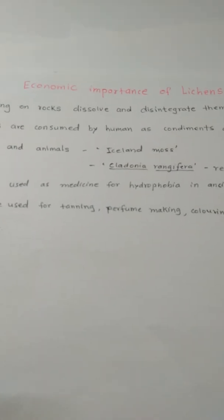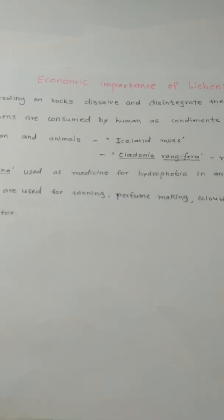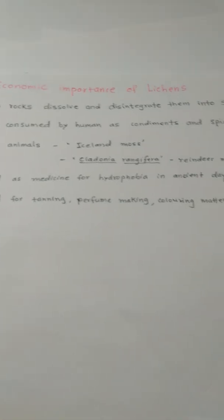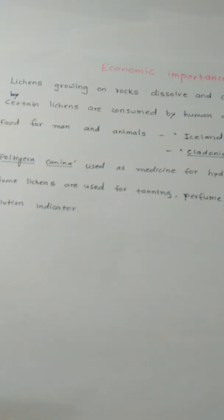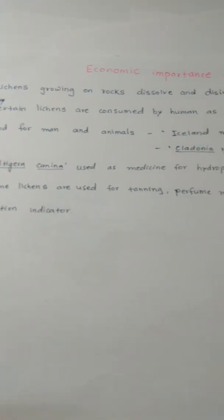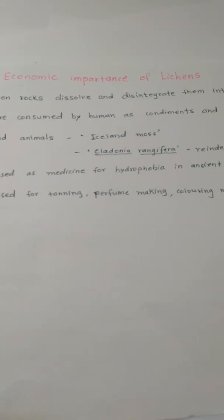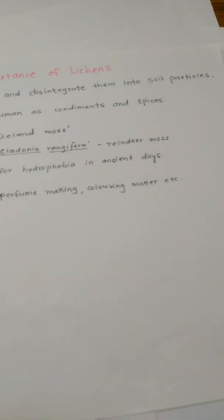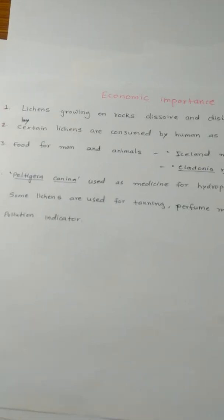Economic importance of Lichen: first, Lichens growing on rocks dissolve and disintegrate them into soil particles. No other plants can grow on rocks, but Lichens can — they weather the rock and convert it into soil, so soil formation takes place due to Lichens.